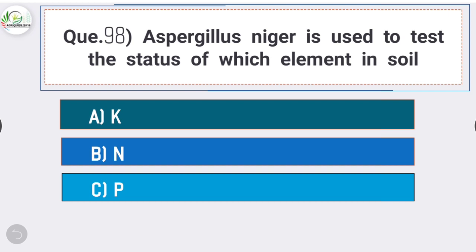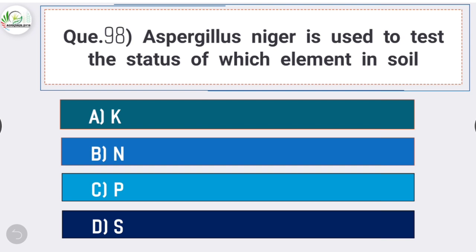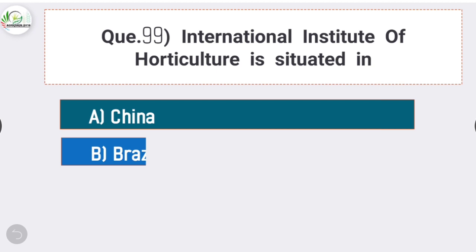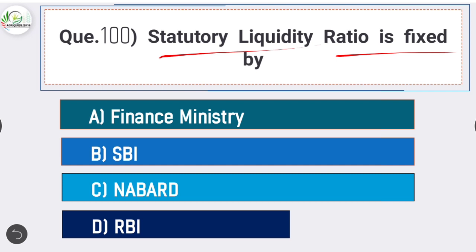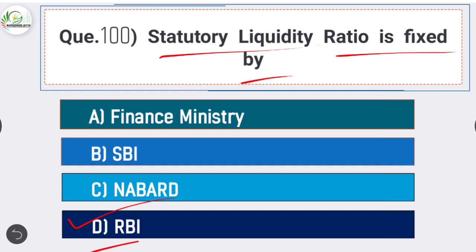Question number ninety-eight: Aspergillus niger is used to test the status of which element in soil? Answer is option A - potassium. Aspergillus niger is used to test the status of potassium in soil. Question number ninety-nine: International Institute of Horticulture is situated in Brazil. Question number one hundred: Statutory Liquidity Ratio is fixed by - answer is option D - Reserve Bank of India.